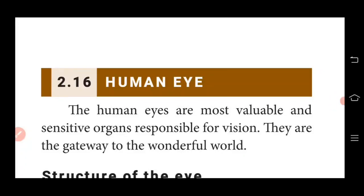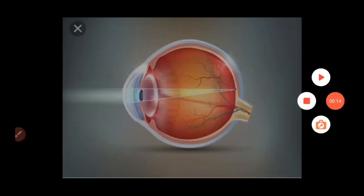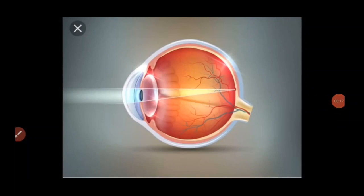Hello students, welcome to Standard 10 Physics online class. We are now learning our second unit, Optics. Today's topic is the human eye. You know that there are five sense organs in our human body: eye, nose, tongue, skin, and ear. Among the five, the eye is the most sensitive organ responsible for vision. We can enjoy the colorful world with the help of our human eye, making it the most valuable sense organ and a gateway to the wonderful world.